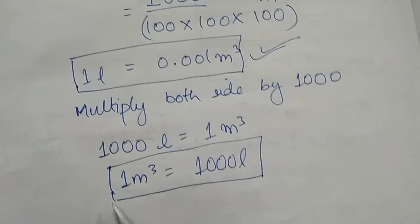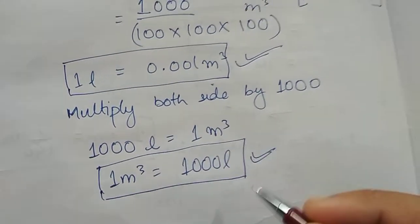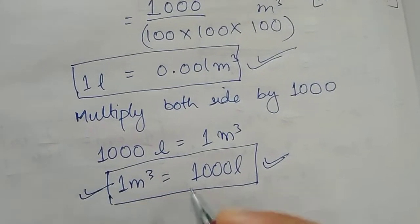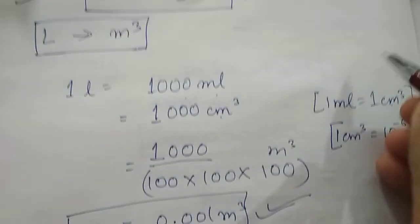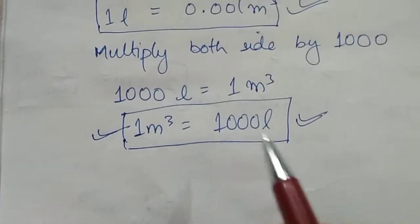Or you can rewrite it as 1 meter cube is equal to 1000 liters. This is the most important relation you have to learn. This relation and the basic relation what we already discovered earlier, these two relations you have to learn and this relation what we derived right now.